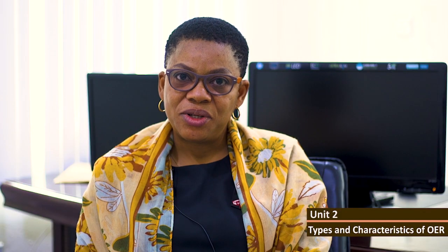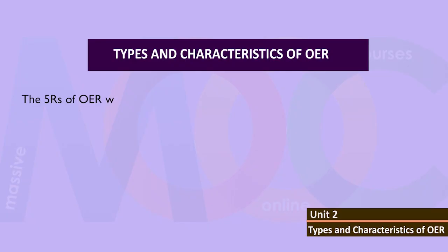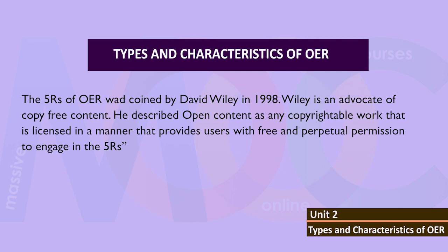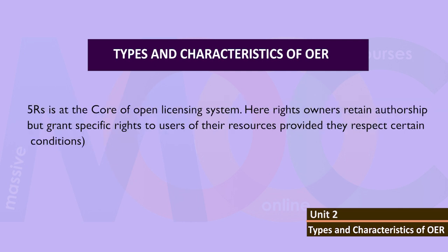It is also worthy of note that the five R's of open educational resources was coined by David Wiley. Wiley is an advocate of copy-free content. He described open content as any copyrightable work that is licensed in a manner that provides users with free and perpetual permission to engage in the five R's. The five R's is at the core of the open licensing system, where rights owners retain authorship but grant specific rights to users of their resources, provided they respect certain conditions.